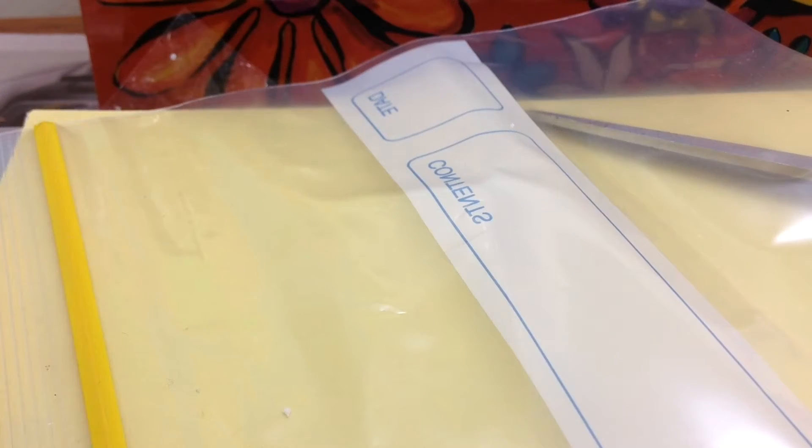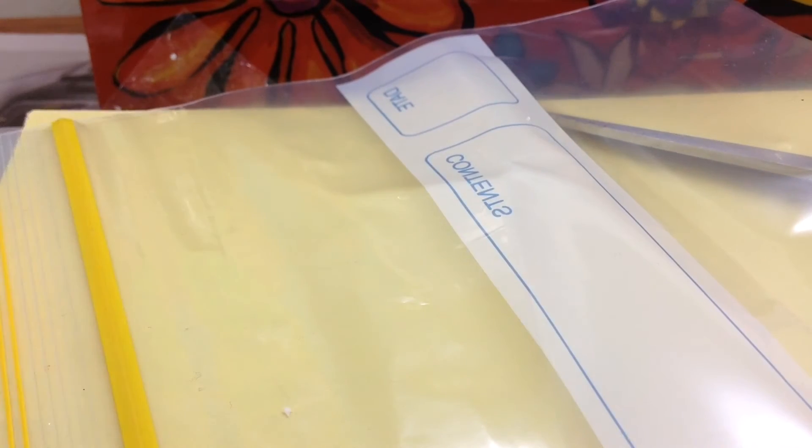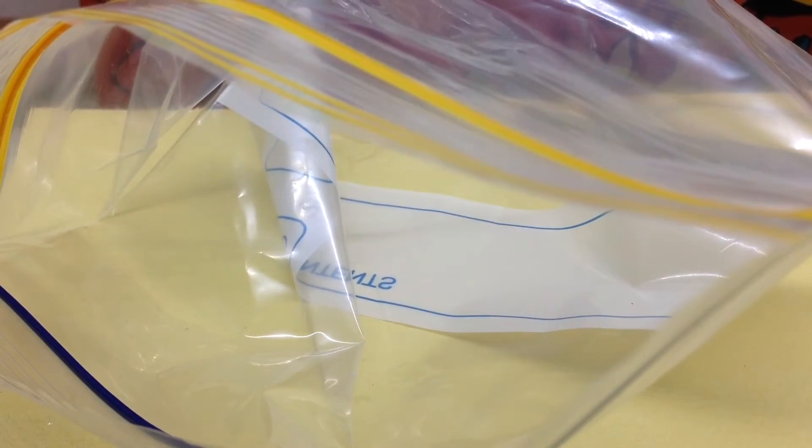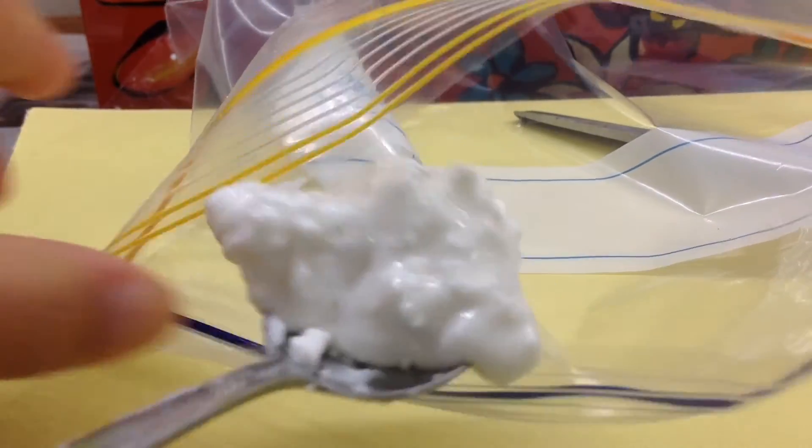Now you're going to want to start by getting your bowl and putting in your whipped cream. This took me ages and it was really hard to film. Pretty much all you have to do is just get a bit and then kind of dump it in the bag and keep doing that until you have all of it in.